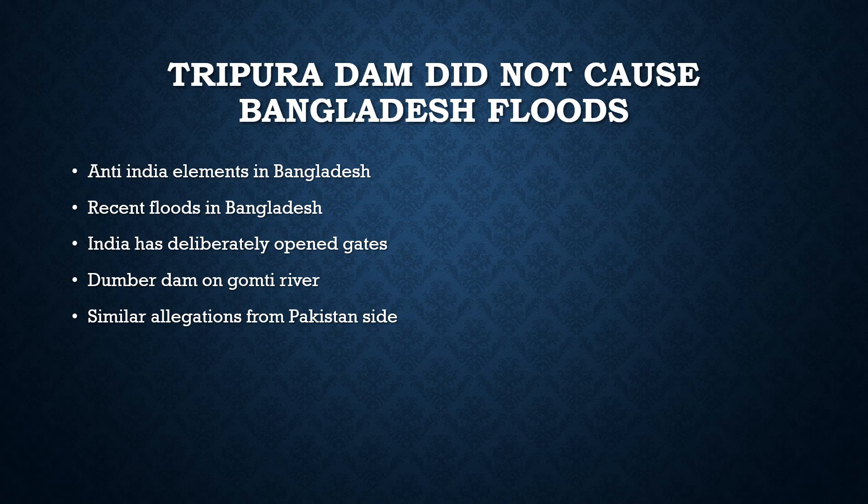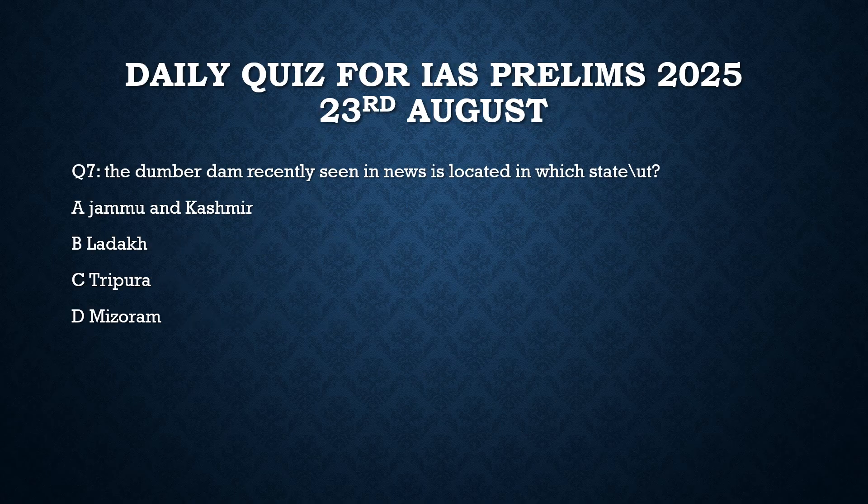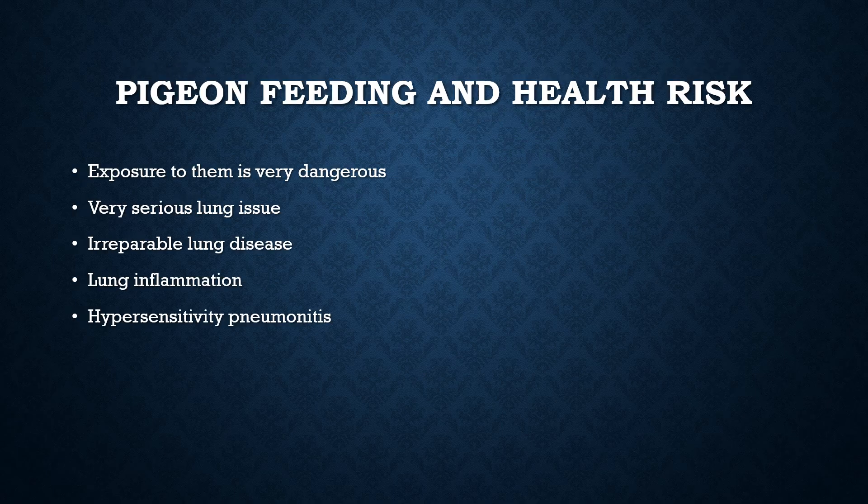It is believed that Pakistan may have played a role in stoking unrest in Bangladesh using its intelligence, provoking Bangladeshi people against India. Question 6: The Dhumbar Dam, recently seen in the news, is located in which state or UT? The answer is Tripura — the dam is on the Gomti River, which originates from Tripura.